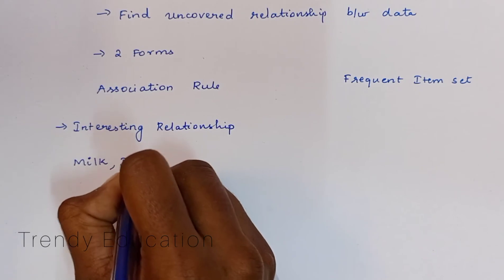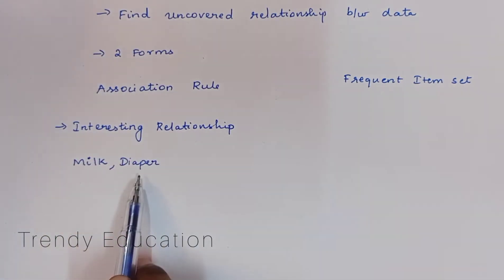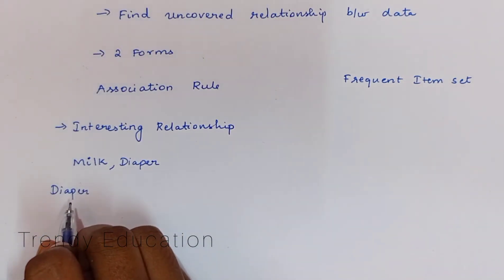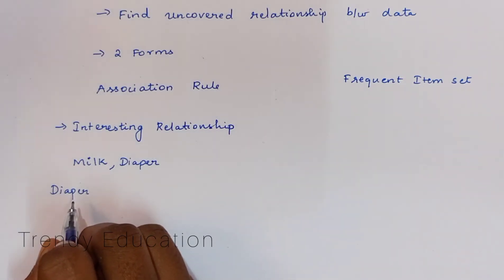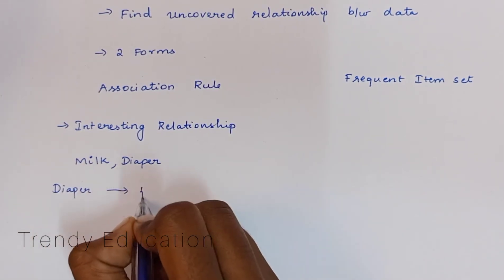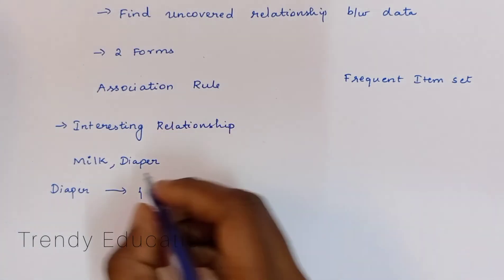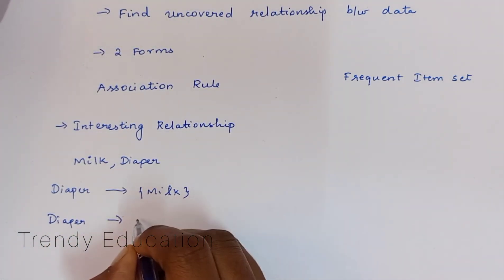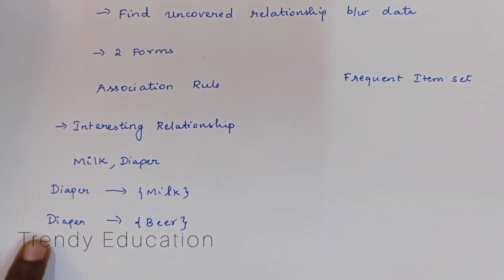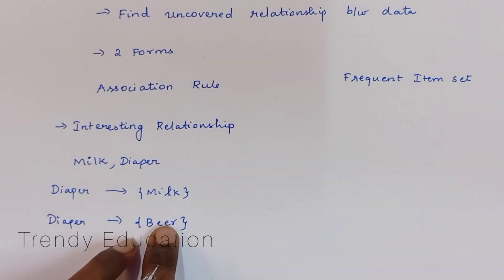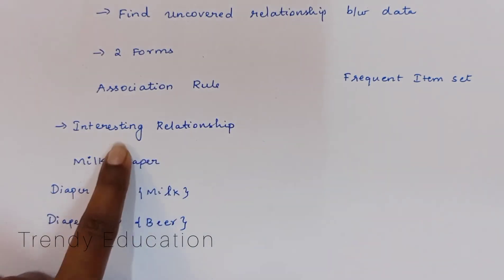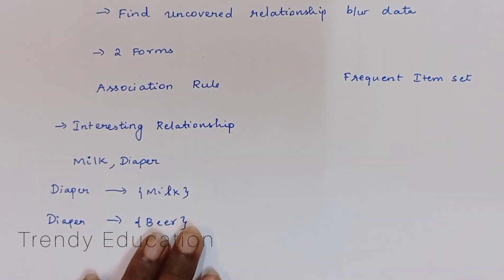If a lady is also buying a diaper — is there any relationship between these two? Yes. If a wife is going to buy milk, it means she's having a baby or one of the family members is having a baby. If a lady is buying a diaper, there is a chance for her to also buy milk. And if a father is coming to buy a diaper, he might also buy beer. So there is a relationship between diaper and beer — when a father comes to buy a diaper, there may be a chance for him to buy a beer. So this is what the interesting relationship between the data.